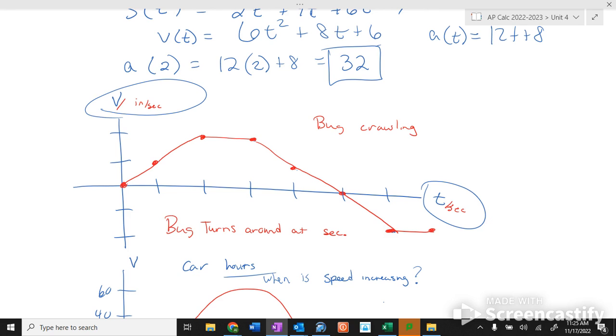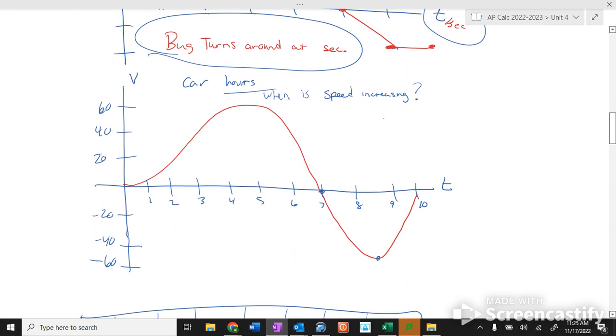After how many seconds does the bug turn around? 1, 2, 3, 4, 5. After 5 seconds, the bug turns around. Because the velocity was positive, now it's negative.